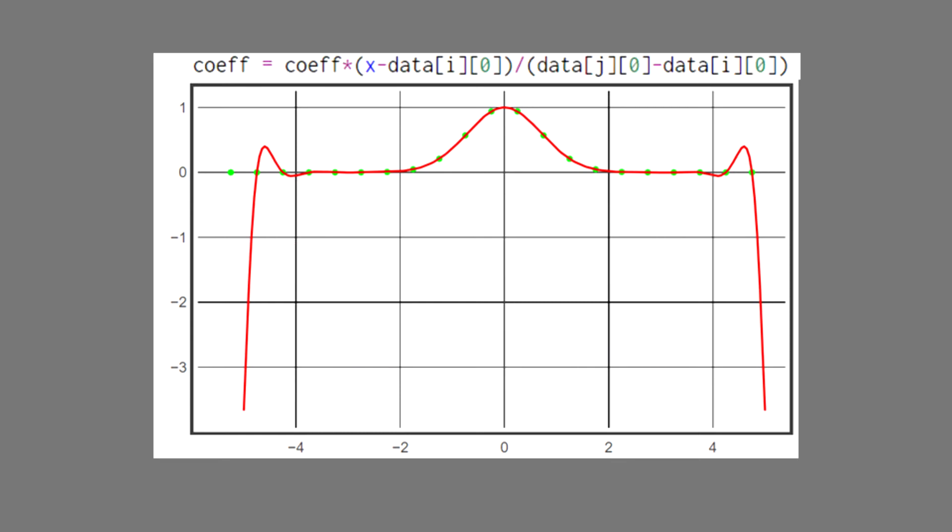Well, think about all the terms we're multiplying together to get this polynomial. We have 21 data points, which means that each term in our summation has 20 factors of x minus a number, giving us a polynomial that starts with x to the 20th power. It's a wonder this monster is well behaved at all.